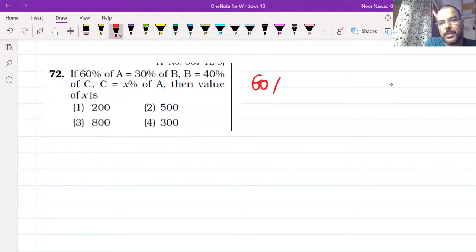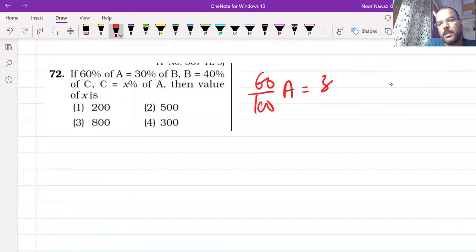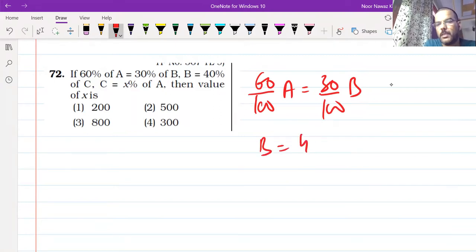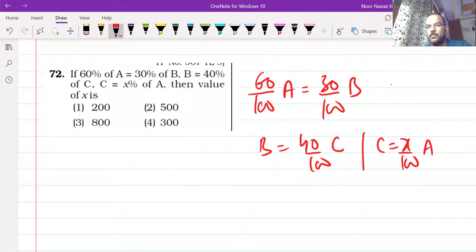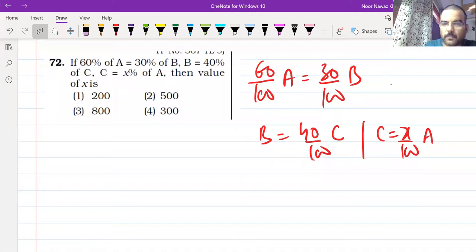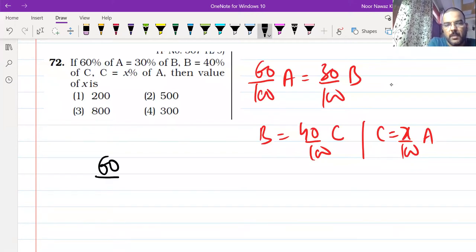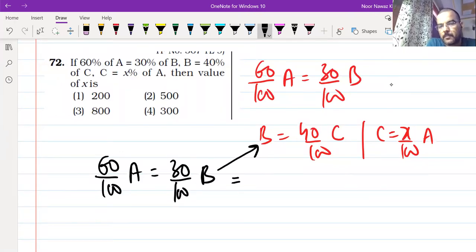60% of A is 30% of B, and B is 40% of C, and C is X% of A. Yes, then value of X is equal to: A is equal to 30% of B is equal to 40% of C.